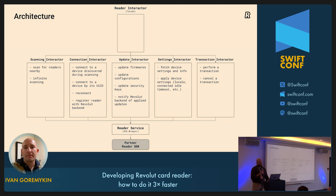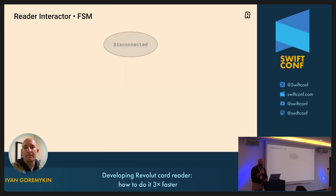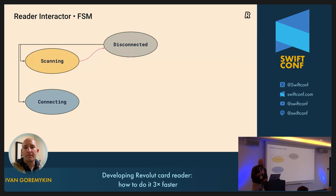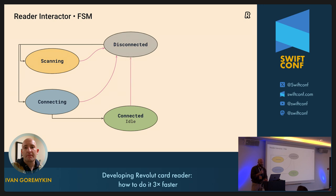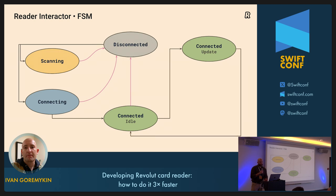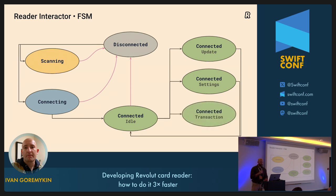The Settings Interactor is responsible for fetching and applying device settings — things like locale (the device supports up to five languages), and connection timeout idle value, which is basically when the reader disconnects if nothing happens. We also have a Transaction Interactor that can perform and cancel a transaction. The client uses the Reader Interactor, which itself is a finite state machine. The system starts in a disconnected state, can go to scanning, and once readers are discovered goes back to disconnected. From disconnected we can go to connecting, and if unsuccessful go back to disconnected. From connecting we can go to connected idle — when the reader is connected but nothing is happening. From connected idle we can start updating and return to idle, fetch/apply settings and return to idle, make a transaction and return to connected idle. From all these states the reader can disconnect.